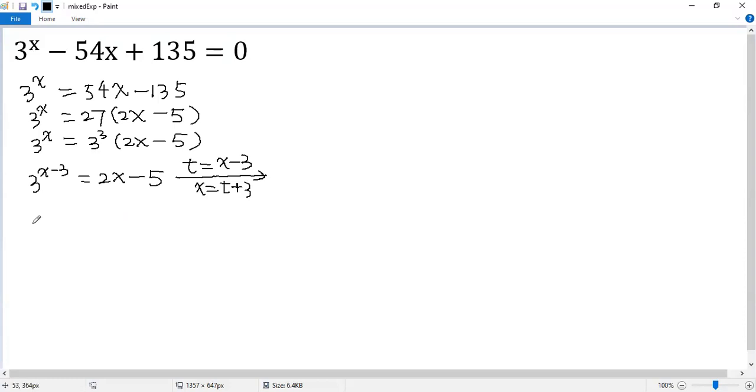Then we get 3 to the power of t. The right side equals 2 times t plus 3 minus 5. We can simplify it. So we get 3 to the power of t equals 2t plus 1.